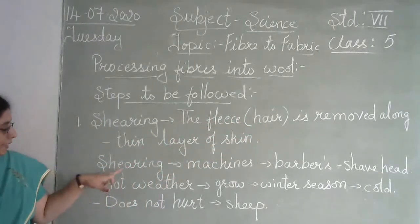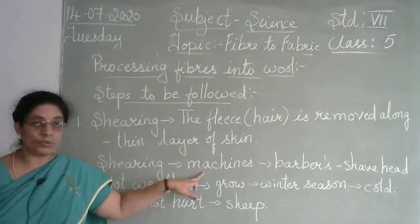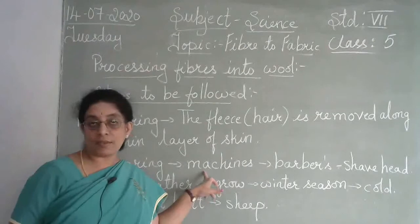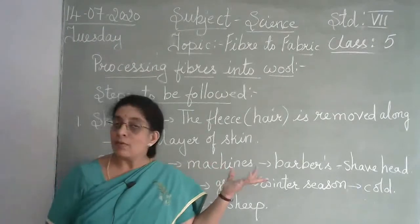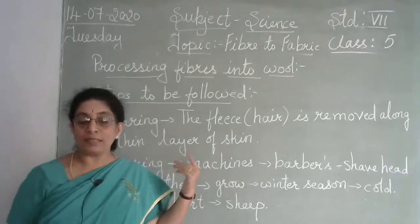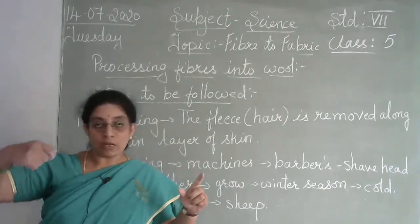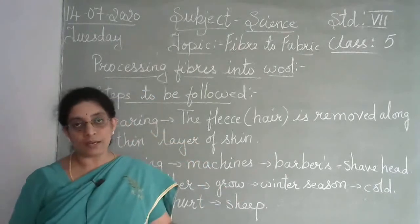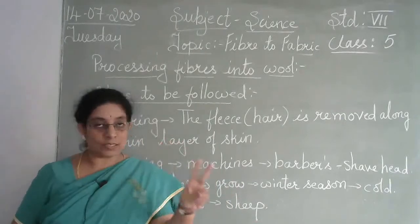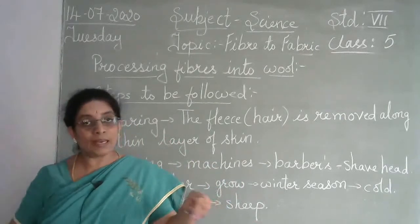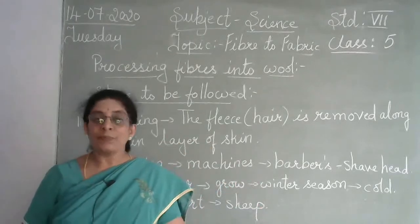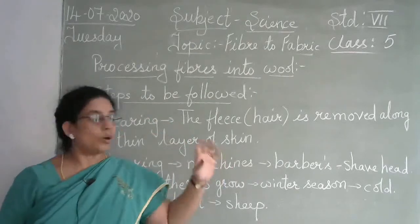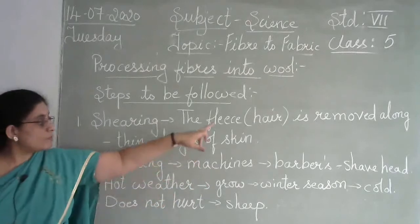Shearing is done using machines — similar to the machines used in barber shops to shave a head. When the machine is put around the head, the whole lot of hair is removed at once. Cutting hair with scissors is different from shaving, and shearing uses a machine similar to the electric shaver.